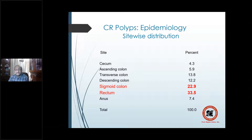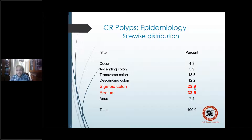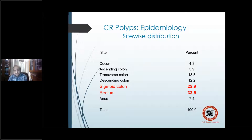Looking at site-wise distribution, the rectum is the most common site, involved in almost 33.5% of cases. The next is sigmoid colon at 22.9%. Then as you travel backwards: descending colon, transverse colon, and the least common is cecum, where hardly any polyps are reported.